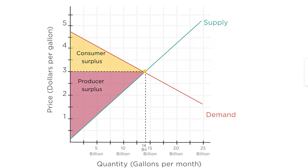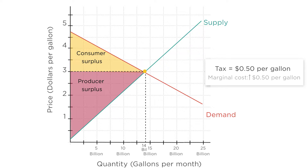Now suppose the government taxes the company selling the gasoline 50 cents a gallon. How does this impact the equilibrium? Think about it from the firm's perspective. They're now paying 50 cents more for every gallon they sell. That means their marginal cost just went up by 50 cents per gallon. So this tax caused their whole marginal cost curve to shift up 50 cents. Remember, the marginal cost curve is the supply curve, so the supply curve shifts up by 50 cents.